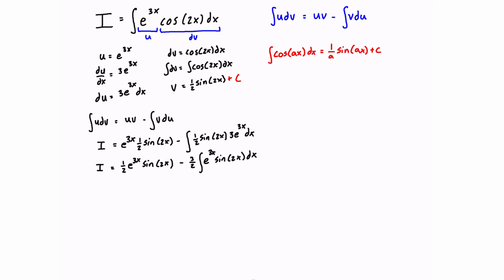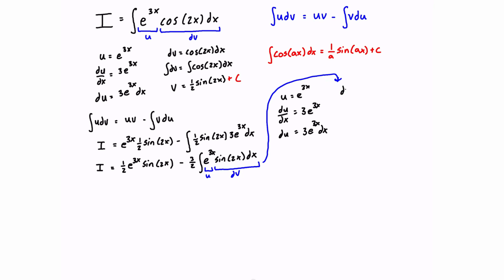It doesn't really matter which function you pick for u, but if you picked the exponential as u in the first iteration, you should pick it again here. So in the second iteration, u is again e to the 3x, giving du/dx equals 3e to the 3x, and du equals 3e to the 3x dx. For dv this time, we're going to have sine of 2x dx.